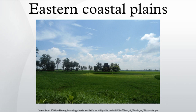The eastern coastal plains refer to a wide stretch of land mass of India, lying between the Eastern Ghats and the Bay of Bengal. These plains are wider and level as compared to the western coastal plains. It stretches from Tamil Nadu in the south to West Bengal in the north.